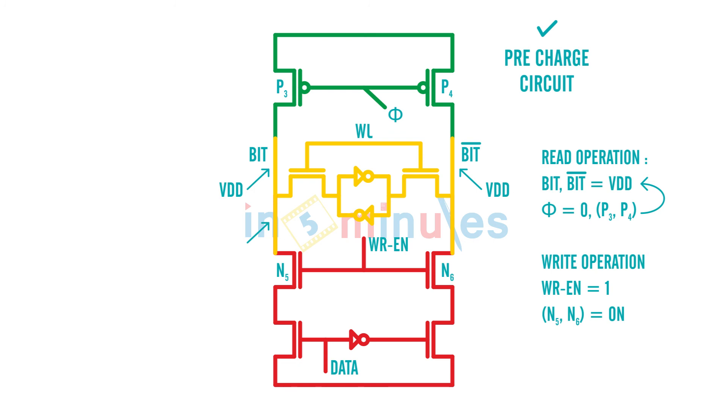Now my data equals 0. When my data is 0, you all will agree that N7 is off and N8 is on. And what's happening - bit does not have a path now. Bit, when this N5 is on, is being reflected here, and when N6 is on, bit bar is reflected here.